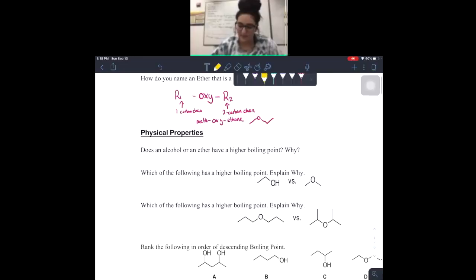Hello all our Orgo people. Today we are going to be covering physical properties of alcohol such as boiling point and acidity. So let's get started. Does an alcohol or an ether have a higher boiling point and why? An alcohol is going to have a higher boiling point and the simple reason for this is hydrogen bonding. So this is the alcohol because of hydrogen bonding.